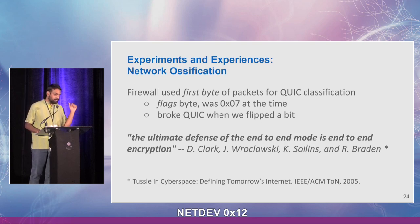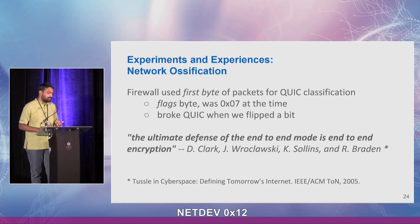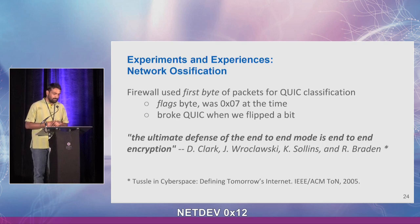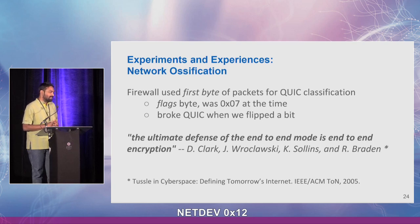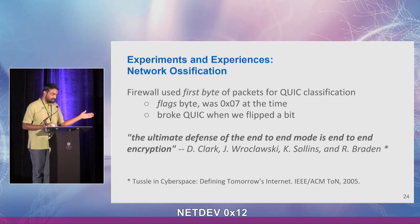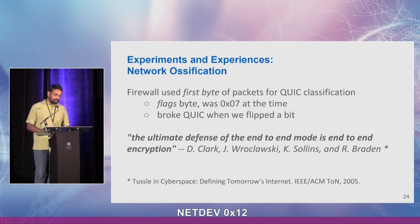This was surprising because this was before the IETF process had started — around 2015 or 2016. There was no public QUIC design document yet, but they decided to build a classifier for a proprietary protocol without consulting the documentation. We realized that even getting vendors to read the documentation is already a task. Some work has gone into that in the IETF. For me at least, this was a moment of realizing the ultimate defense of the end-to-end model is end-to-end encryption — that's been a guiding principle for us.